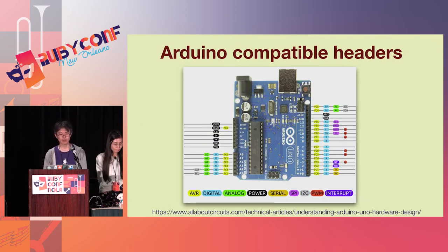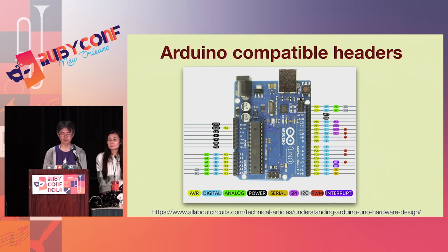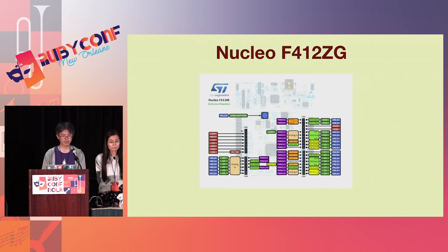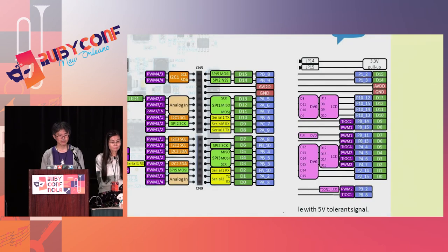Another good point of Arduino is compatible headers. The headers of GR Peach and Nucleo have the same layout of I/O pins as Arduino. If a board supports this layout, we can use Arduino shields on the board. This figure shows GR Peach pinout — the green and red areas are compatible with Arduino pinout. Similarly, Nucleo pinout has the same green and red area layout as Arduino. GPIO pins' layout is the same, but other pins such as serial pins and SPI pins are different.